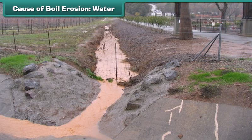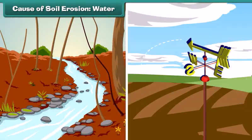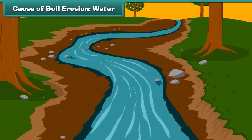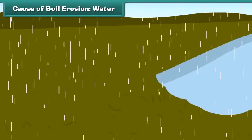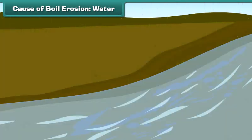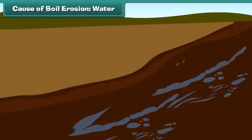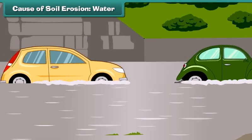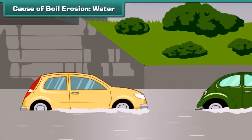Let us know the factors which cause soil erosion. The most common factors are water and wind movements. Water flowing through the ground carries away soil with it. During rain, soil particles are detached by raindrops and carried away by running water. Floods are also a main cause of soil erosion.